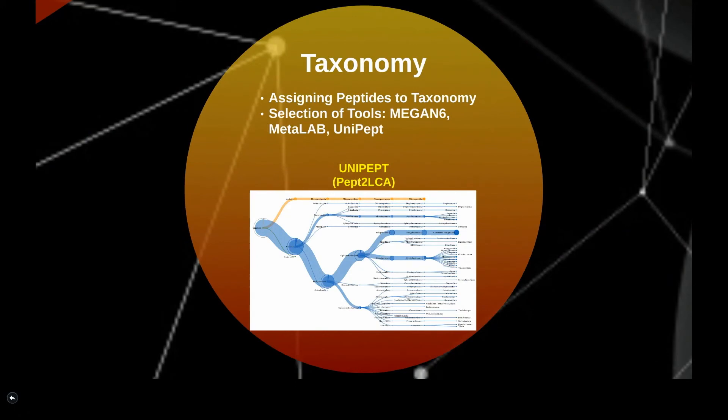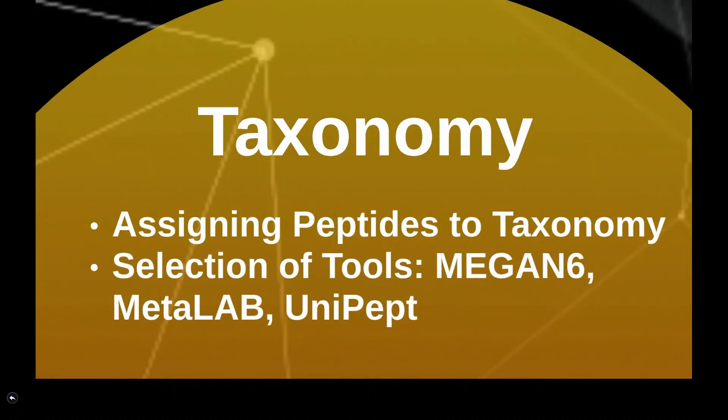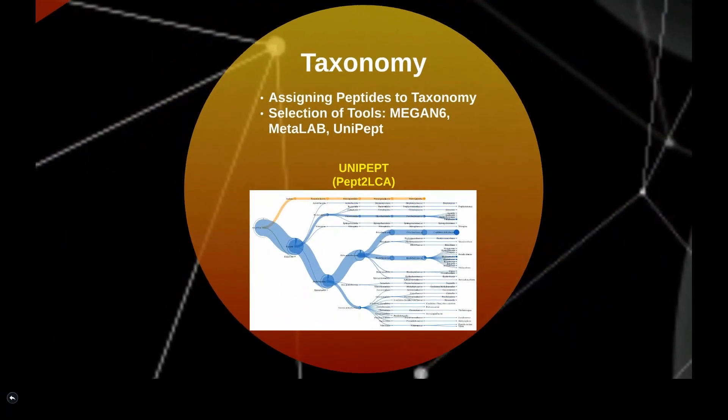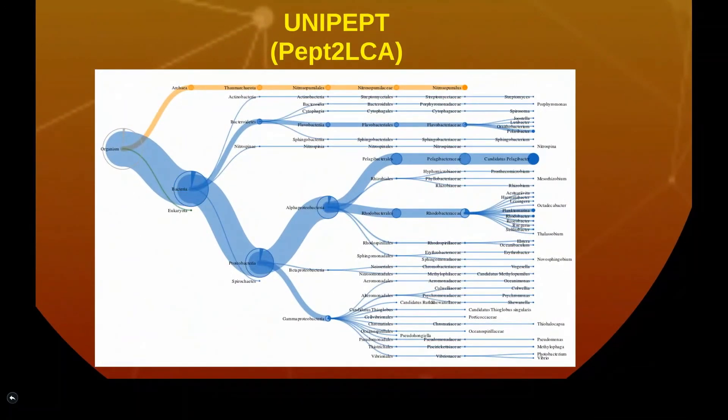The last step is wherein peptides are assigned to taxonomy. Although many tools are available for taxonomy, we have used UNIPEPT tool, which maps sequences to annotated microbial organisms to provide a list of taxon identifications.